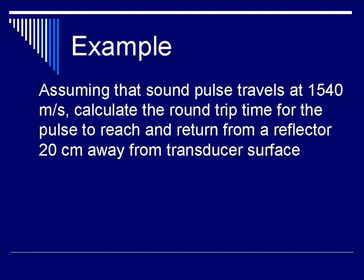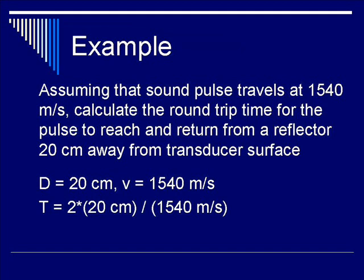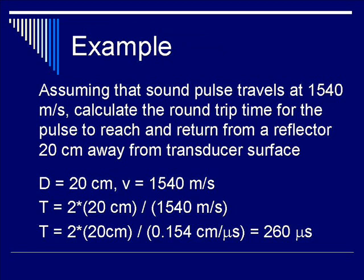Assuming that the sound pulse travels at 1540 meters per second, calculate the round trip time for the pulse to reach and return from a reflector that is 20 centimeters away from the transducer surface. Using T equals 2D over V: 2 times 20 centimeters divided by 1540 meters per second gives you 260 microseconds, once you account for unit analysis.